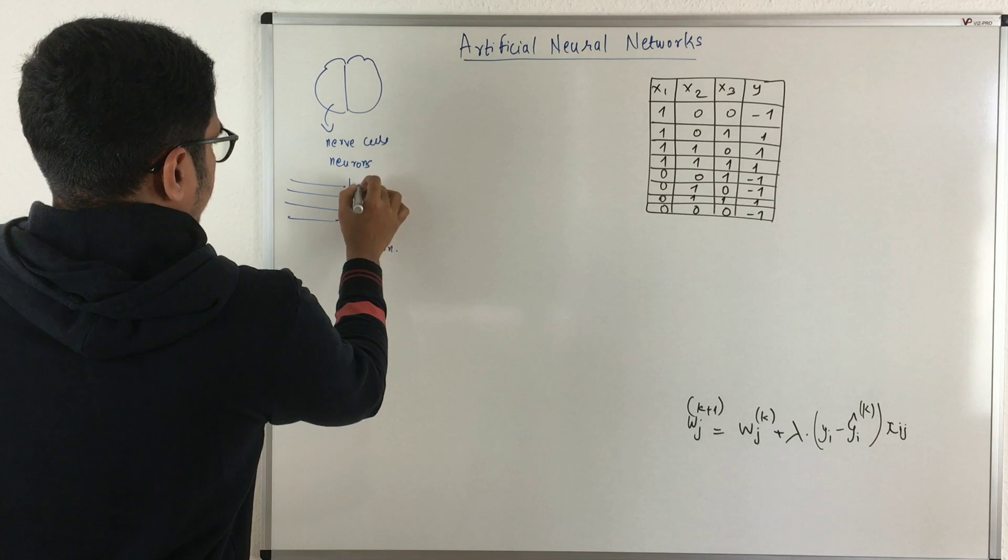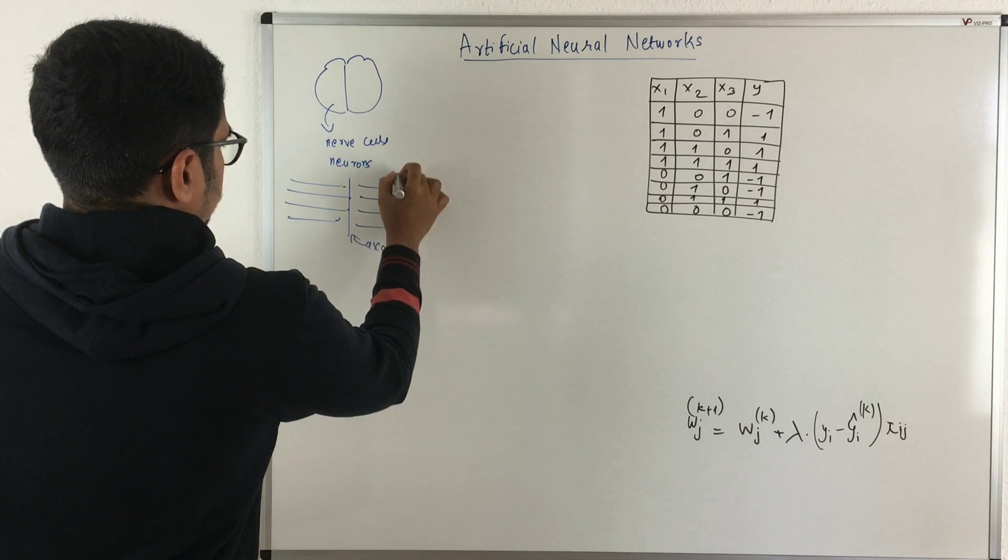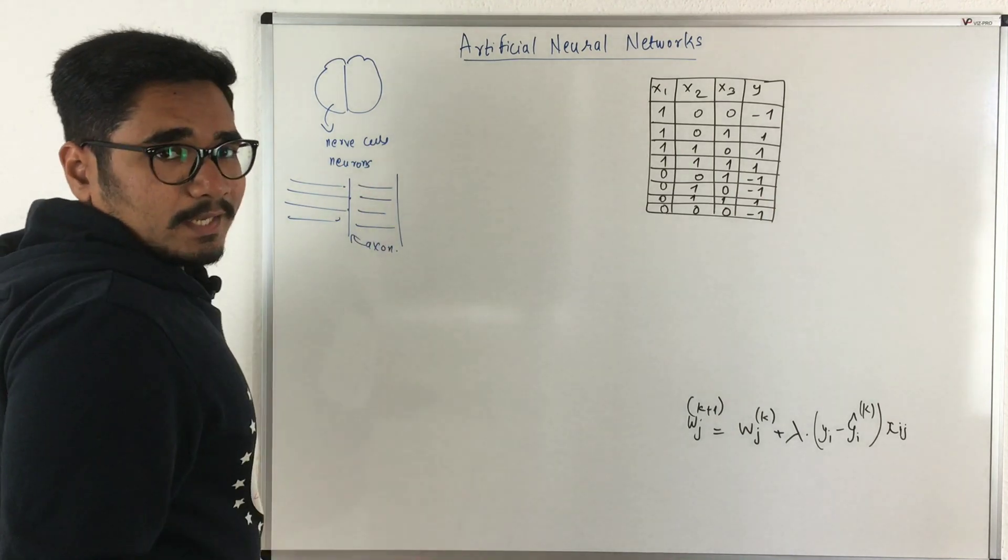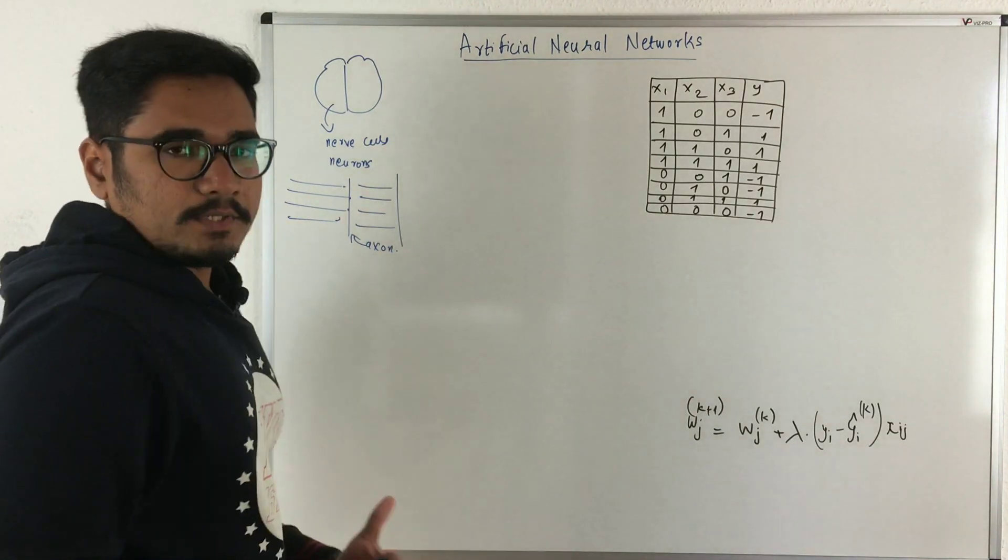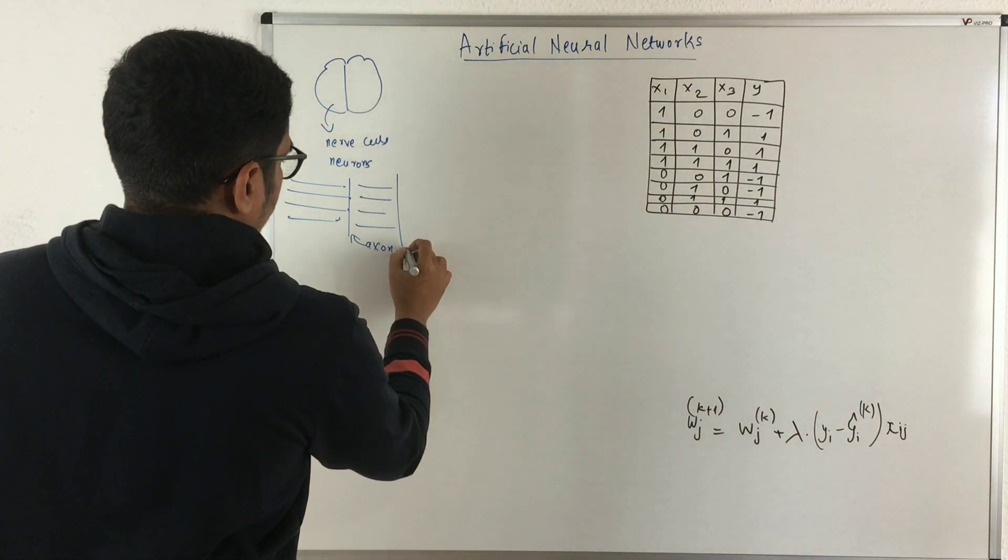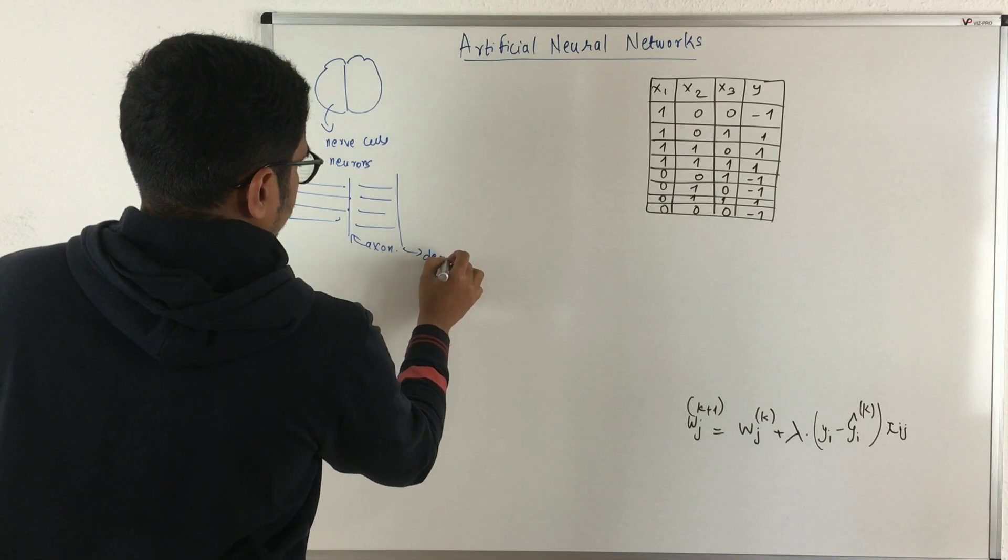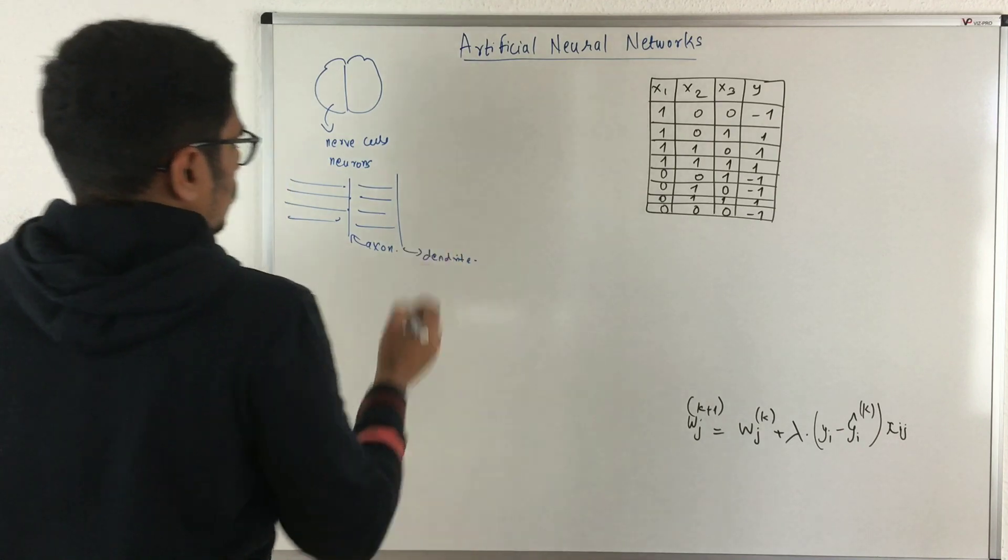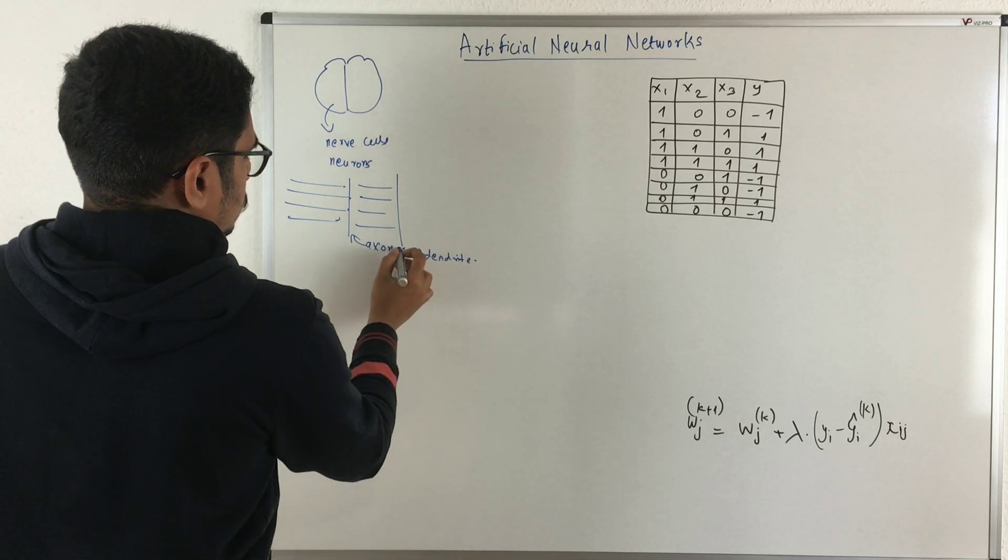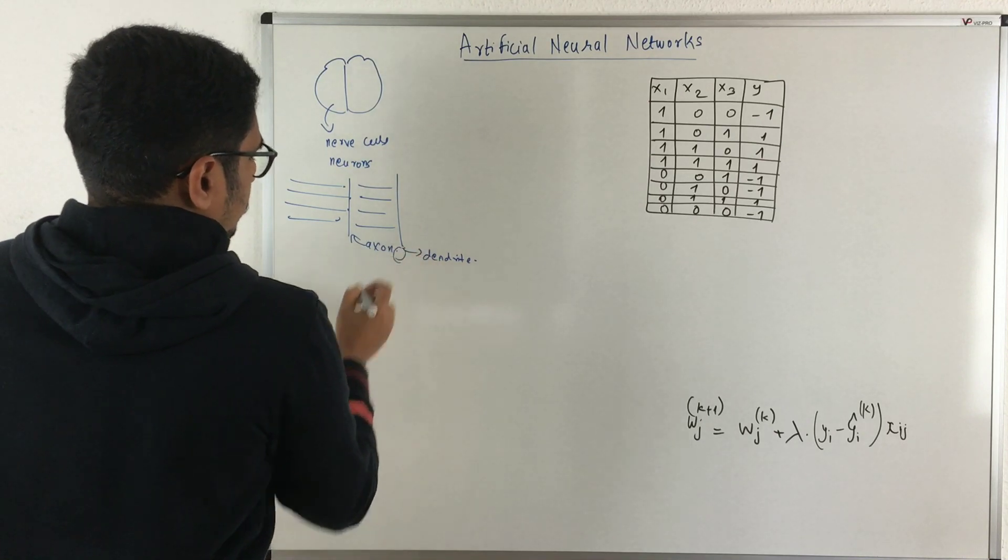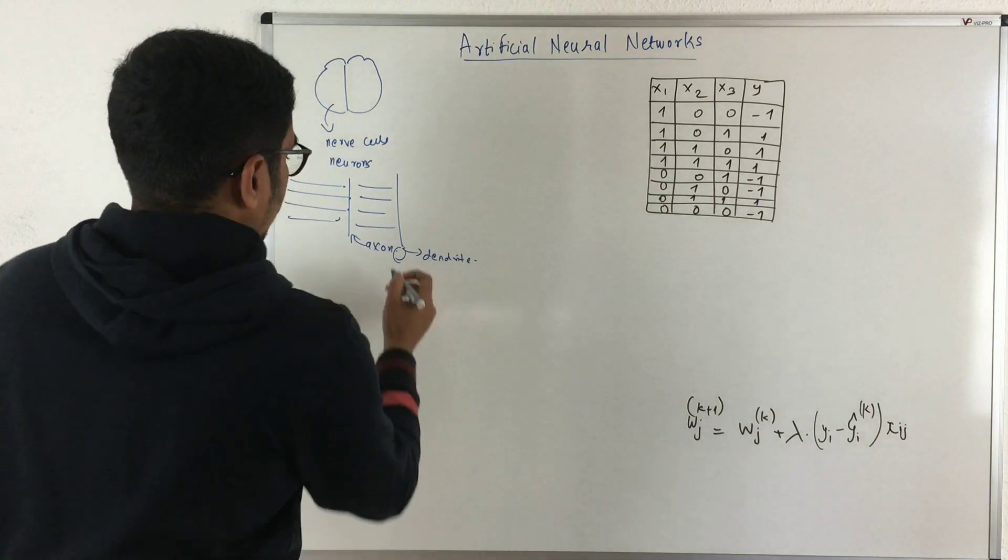Now this axon is connected to other neurons and to other axons as well. This interconnection of different two axons takes place at a place called a dendrite. There is a connection point between this axon and dendrite. This contact point is called a synapse.